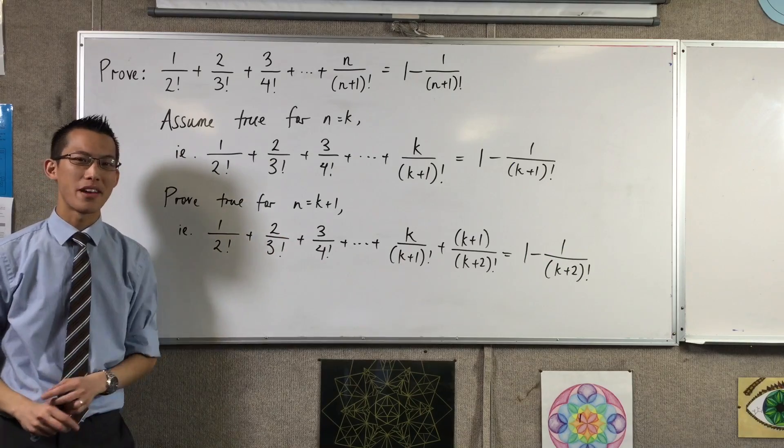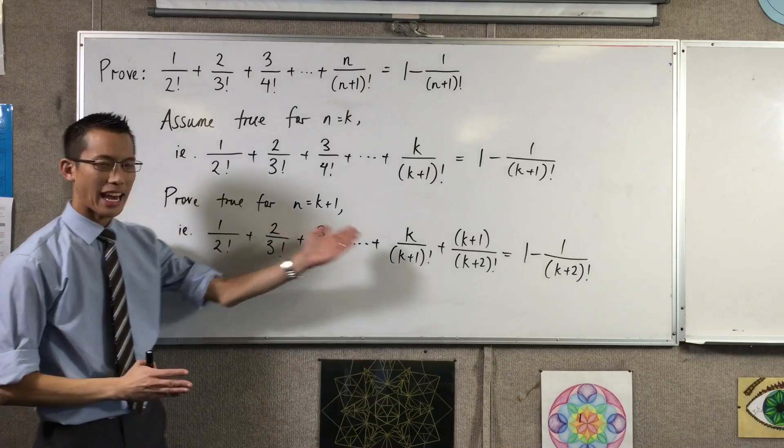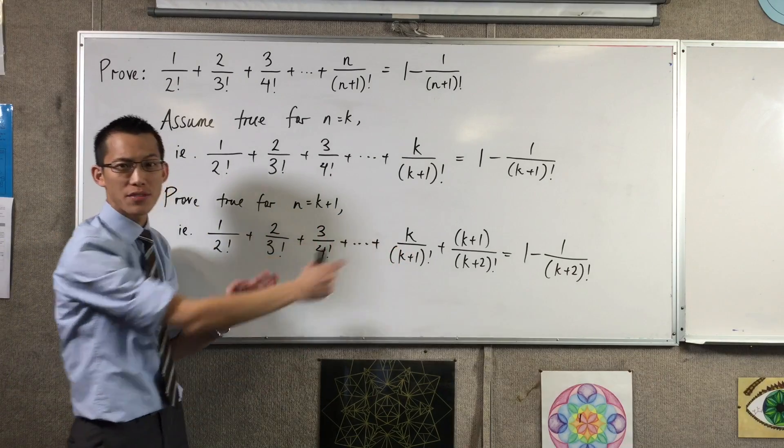This is the statement we're trying to prove. We've substituted k plus 1 into both sides of the equation, and even though we've written this down, we don't actually know whether it's true or not. We need to show using careful algebra that one side's equal to the other. We should start with one side and manipulate it till we can show that it's identical to the other side. I'm going to begin with the left.